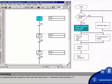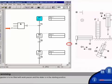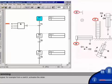We start programming the sequence chain with the initial step S1, followed by the transition T1. As a first action, the workpiece is to be moved under the drill. To start this action, we created the following AND logic operation as transition T1. The magazine is to be filled with workpieces, and the slider is in the starting position. A start signal, for example from a switch, activates the slider.